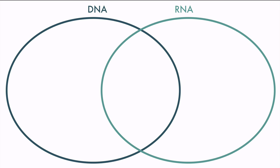DNA and RNA are both nucleic acids and are made of nucleotides. Nucleotides have a phosphate, a sugar, and a base.